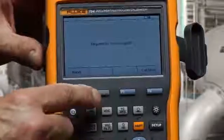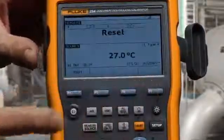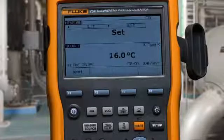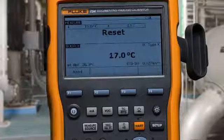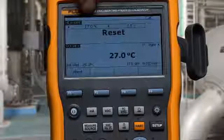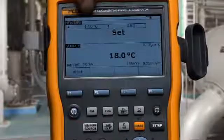We select auto test and continue. The calibrator will source the temperature back and forth across the set point, narrowing its temperature swing until it has a good identification.